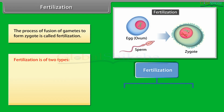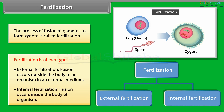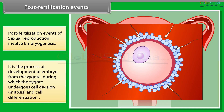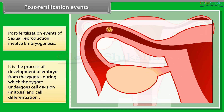The process of fusion of gametes to form a zygote is called fertilization. Fertilization is of two types: external fertilization, where fusion occurs outside the body of an organism in an external medium, and internal fertilization, where fusion occurs inside the body of the organism. Post-fertilization events of sexual reproduction involve embryogenesis — the process of development of the embryo from the zygote, during which the zygote undergoes cell division, mitosis, and cell differentiation, as shown in the diagram.